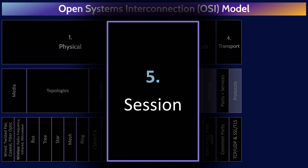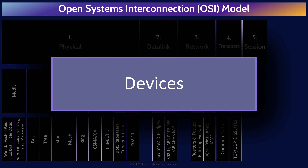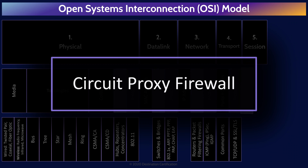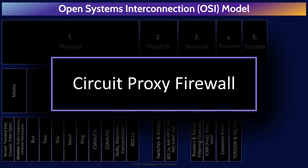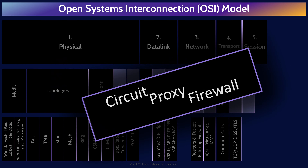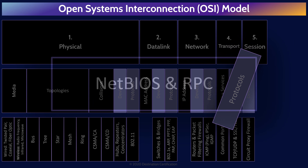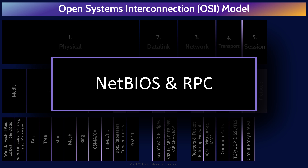Next up, Layer 5, the Session Layer, which is responsible for inter-host communication. The lone Layer 5 device you should know about is a Circuit Proxy Firewall. The Layer 5 protocols: NetBIOS, Network Basic Input-Output System, which allows applications on computers to communicate with one another over a LAN. And RPC, Remote Procedure Call, which enables a client to send a request to a remote server to execute a specific procedure with supplied parameters.